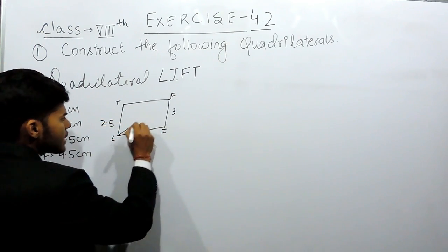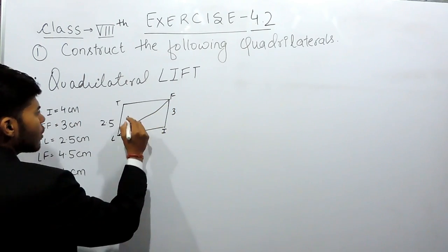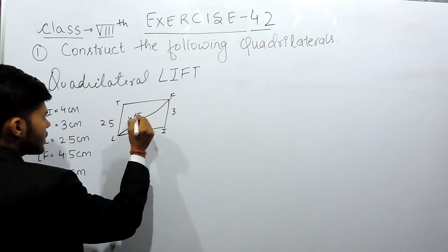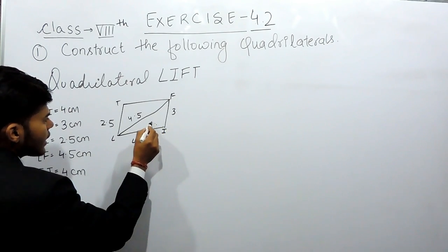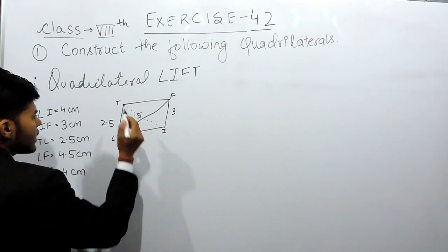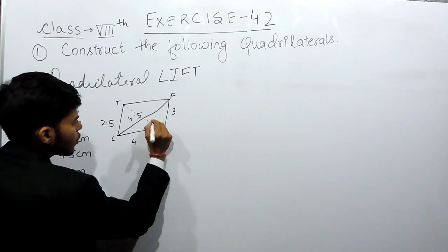LF, the diagonal, is 4.5 cm and IT, which I'm making as a dotted diagonal, is 4 cm.